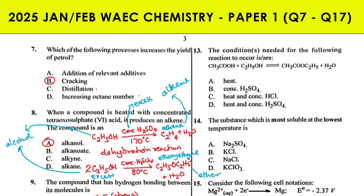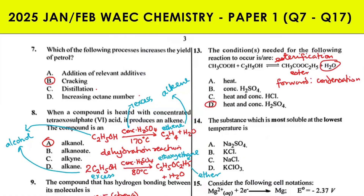Question 13: this is an esterification reaction — a reaction between a carboxylic acid (alkanoic acid) and an alkanol to form an ester and water, in the presence of concentrated H₂SO₄ and heat. It is a reversible reaction. The forward reaction is called condensation because water is eliminated, and the backward reaction is hydrolysis.